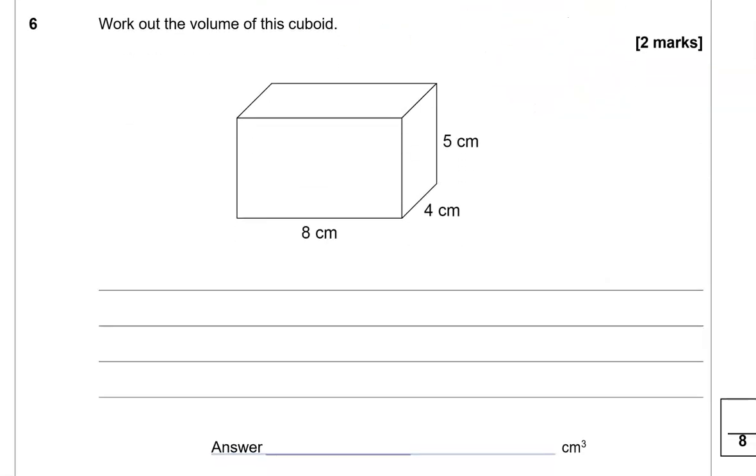Work out the volume of this cuboid. So to work out the volume, we'll multiply length by width by height. So we're going to have to multiply 8 by 4 by 5. 8 times 4 is 32. So we're going to do 32 times 5. Let's just use the column method. 5 times 2 is 10. So 0 down and 1 is carried over. 5 times 3 is 15 and the 1 is 16. So 160 cubic centimeters.